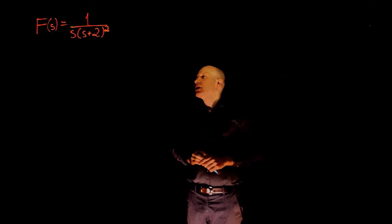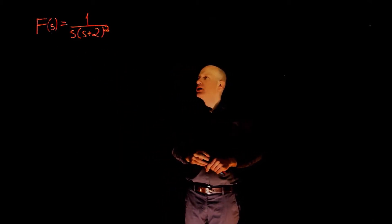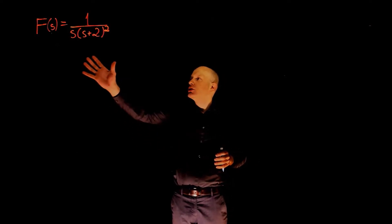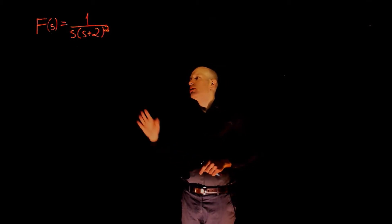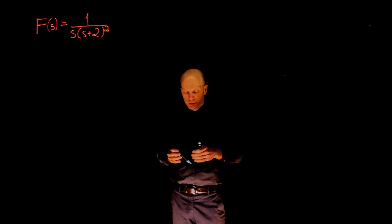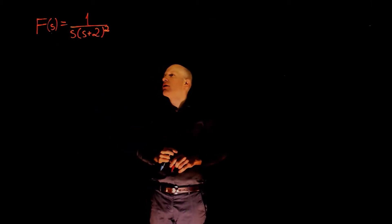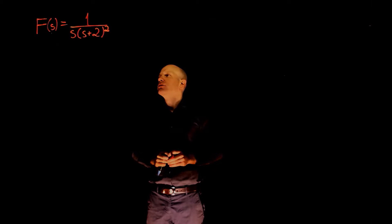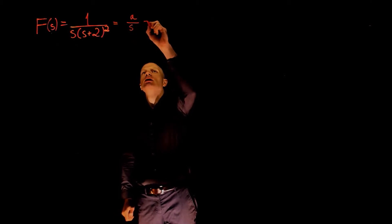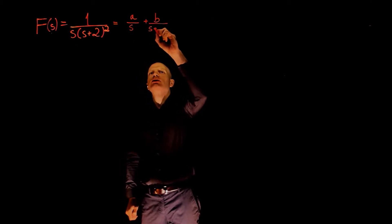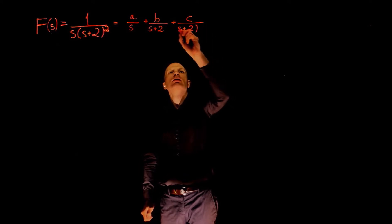First, let's find the inverse Laplace of f(s). As you can see, this form will not be found in any table of Laplace transforms, so we need to decompose this function into smaller fractions that we can find in a table. To do the partial fraction decomposition, we first need to find the partial fractions that can be combined to form f(s). For this type of denominator, f(s) can be written as A over s, plus B over (s+2), plus C over (s+2)².